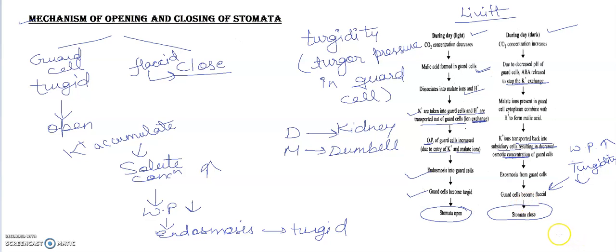One more theory you can study about, sugar concentration theory. What happens during day in sugar concentration theory? There will be too much glucose amount found due to the process of photosynthesis. When the amount of glucose is increased, there will be endosmosis. What happens when cells are turgid and stomata open.